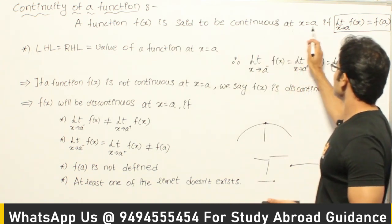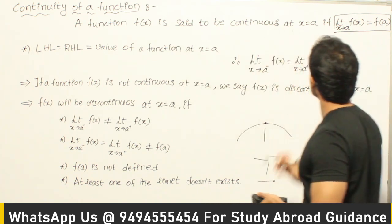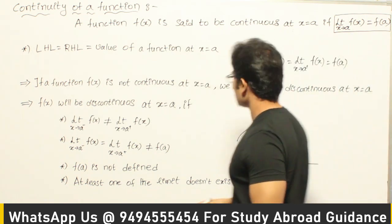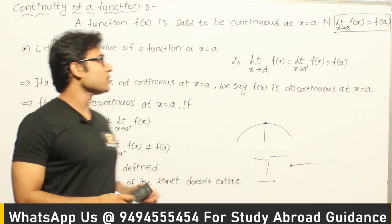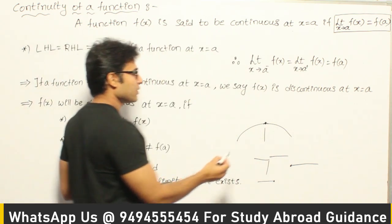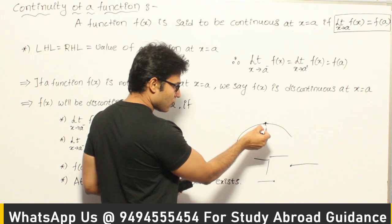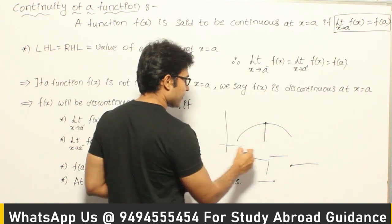Now let's look at how to formally define it. A function f(x) is said to be continuous at x = a if the limit as x tends to a of f(x) equals f(a).